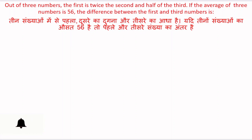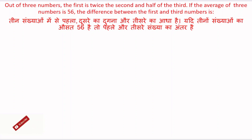Out of three numbers, the first is twice the second and half of the third. If the average of three numbers is 56, find the difference between the first and third number. The second number is the smallest number.